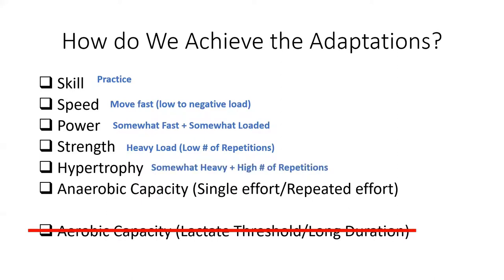Hypertrophy: we have to train somewhat heavy with higher numbers of repetitions. There is evidence that you can develop hypertrophy at any rep range, but the most effective is making it heavy to the point of almost failure for as many repetitions as possible — somewhere between 60 to 90% of your one repetition maximum for as many repetitions as you can perform. The heavier it can be, the more tension, the more stress there will be for a hypertrophy adaptation.